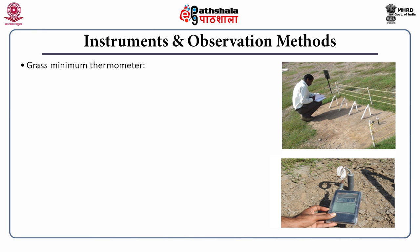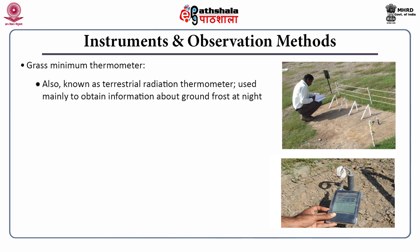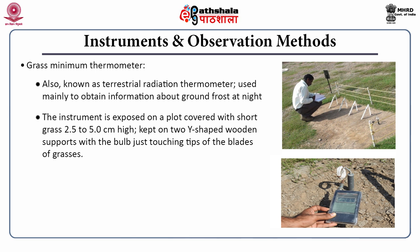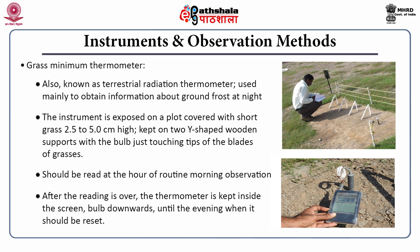Next is the grass minimum thermometer, also known as the terrestrial radiation thermometer. It is used to obtain information about the occurrence of ground frost at night. The instrument is exposed on a plot covered with short grass of 2.5 to 5 centimeters height, kept on two wide separate wooden supports with the bulb just touching the tips of the blades of grass. It should be read at the hour of routine morning observation. After reading, the thermometer is kept inside the screen with the bulb downwards until evening, when it is set again and put over the grass.